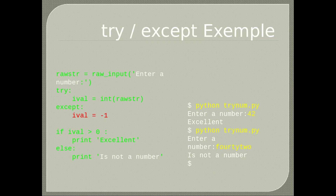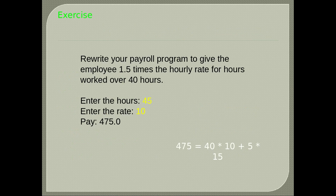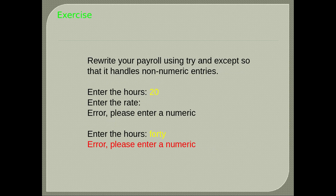Here's an exercise: rewrite your payroll program to give the employee 1.5 times the hourly rate for hours worked over 40. Rewrite your payroll using try and except so that it handles non-numeric entries. Consider possible user input errors.